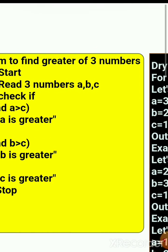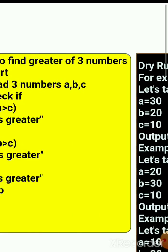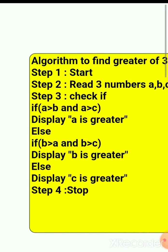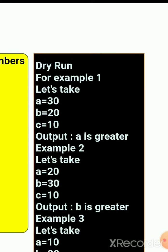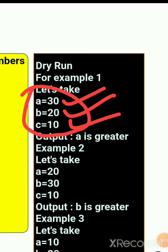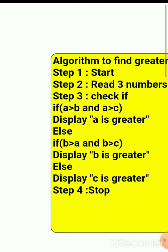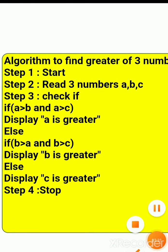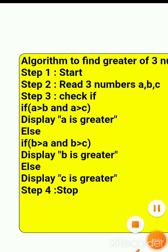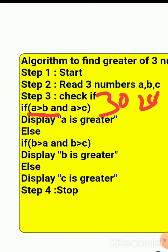Now let's do the dry run. I've drawn the flowchart here and we'll go through examples. First example: a = 30, b = 20, c = 10. The largest is a. Let's trace each step in the algorithm with these values.